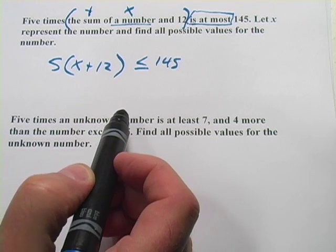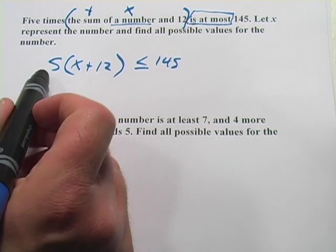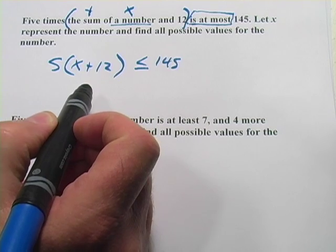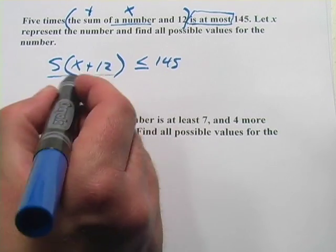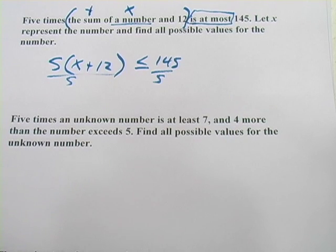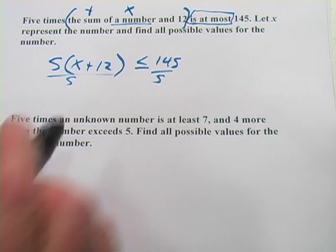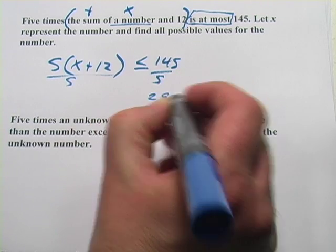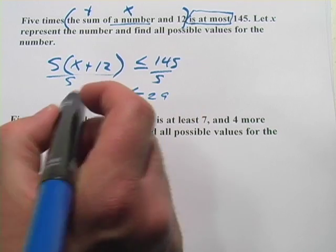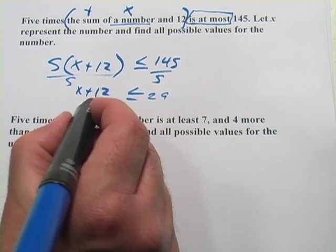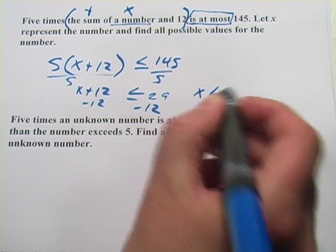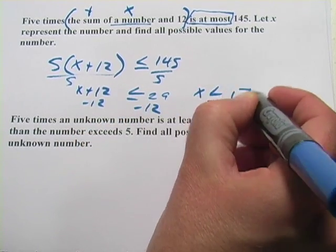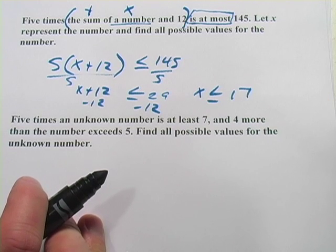Now that we've got this written out, we can just go ahead and solve it. You could multiply the five through and continue on with the problem that way, but I'm actually going to divide both sides by five to start with. So 145 divided by five, that's 29. And now I've got x plus 12 over here. And all I have to do is subtract 12 from both sides. And I've got x is less than or equal to 17. And that's our answer.